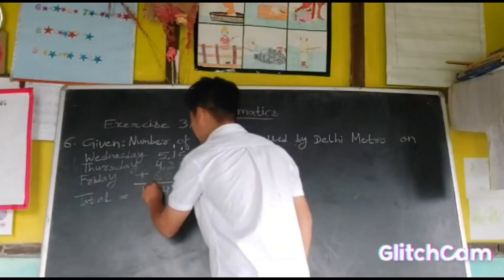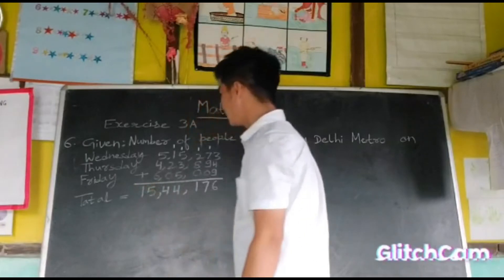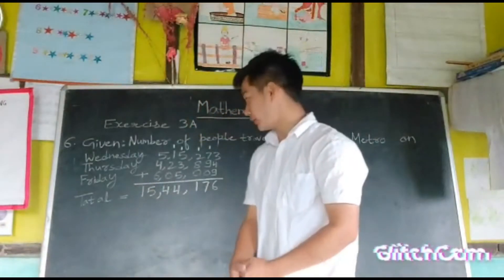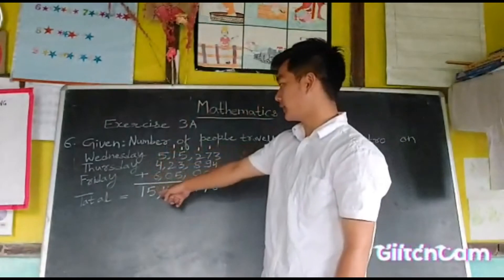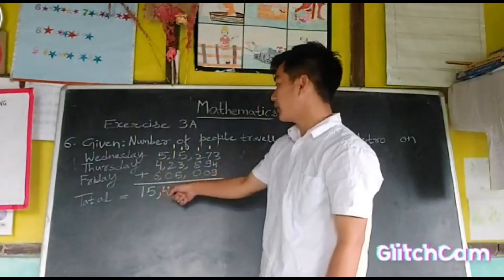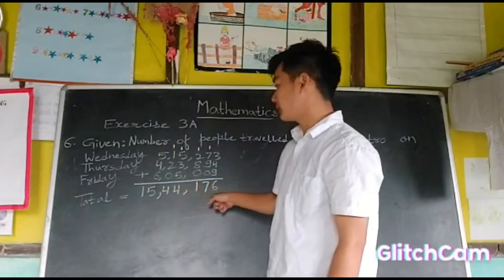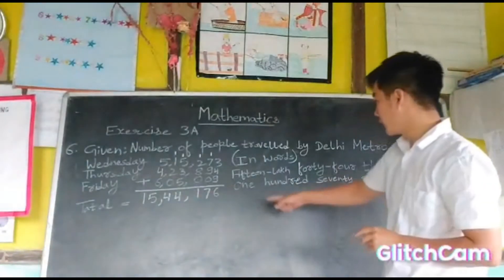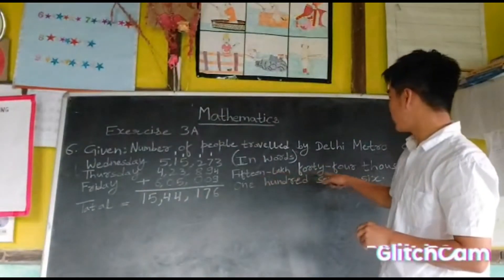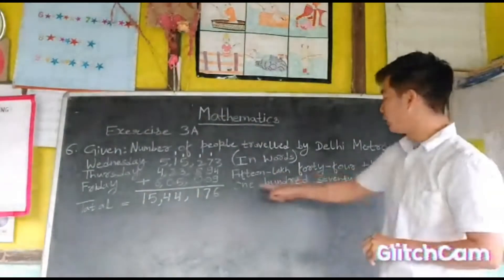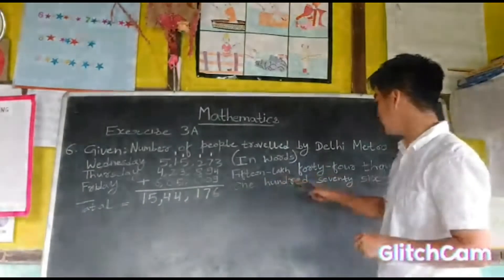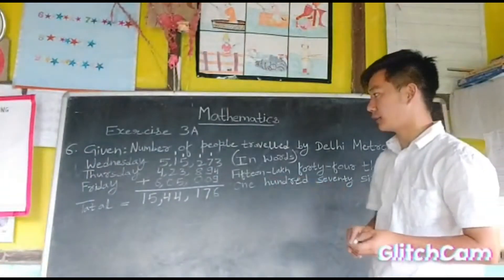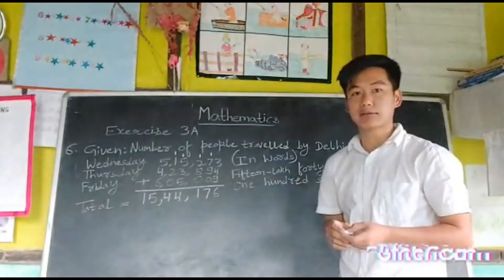So the total number of people who travelled by Delhi Metro on Wednesday, Thursday, and Friday is fifteen lakh forty four thousand one hundred and seventy six. In words: fifteen lakh forty four thousand one hundred and seventy six.